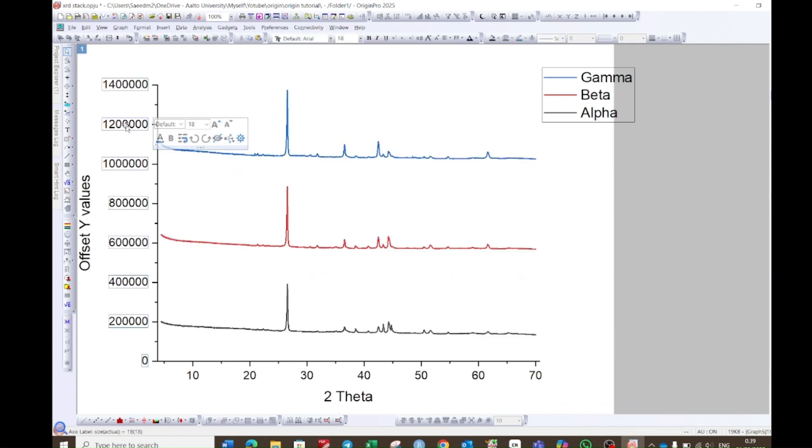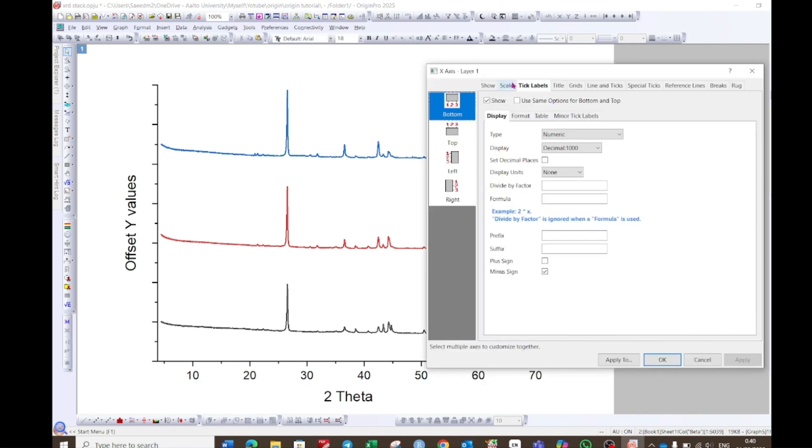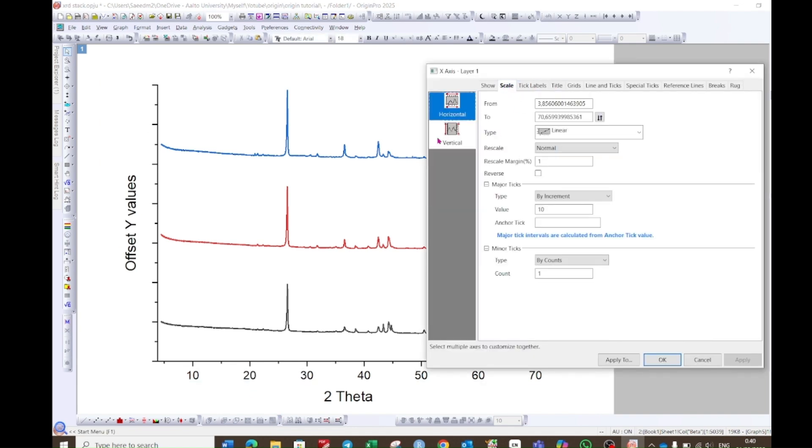Now select this y-axis, hit the delete button from the keyboard. Now again select this x-axis. Go to the scale option. Choose vertical.